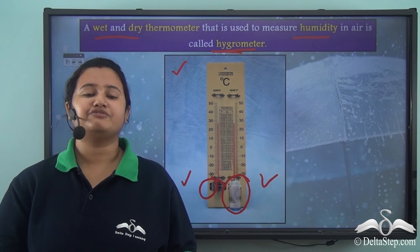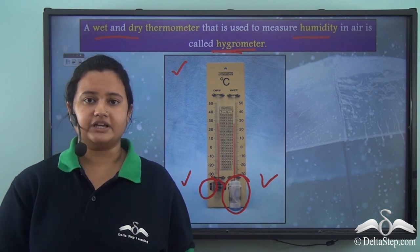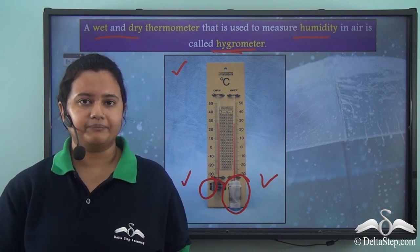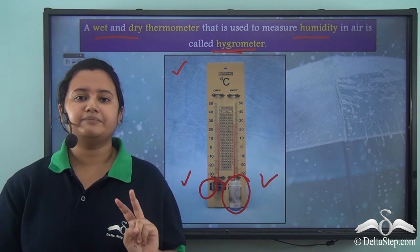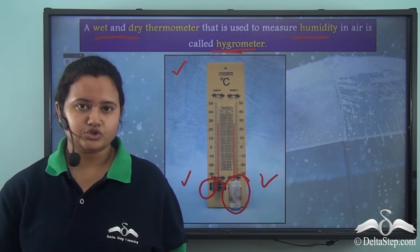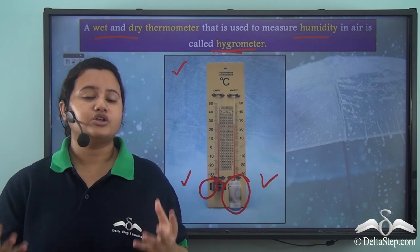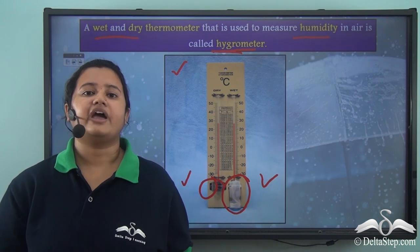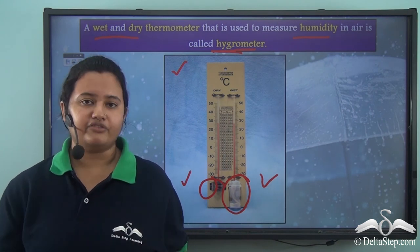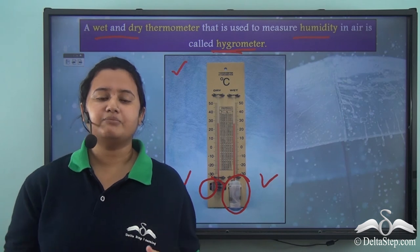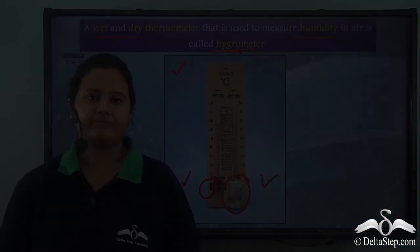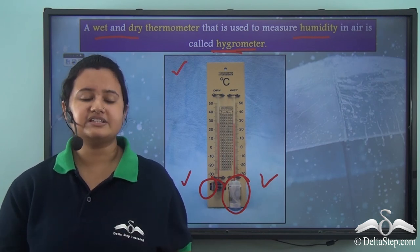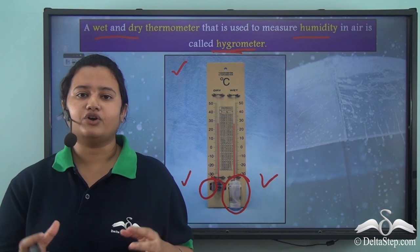In today's lesson we first understood the meaning of humidity — the amount of water vapour present in air. We then discussed two types of humidity: absolute humidity and relative humidity, and compared them. Finally, we discussed the hygrometer, the device used to measure humidity. In our next video we will discuss evaporation and the factors that affect the rate of evaporation.